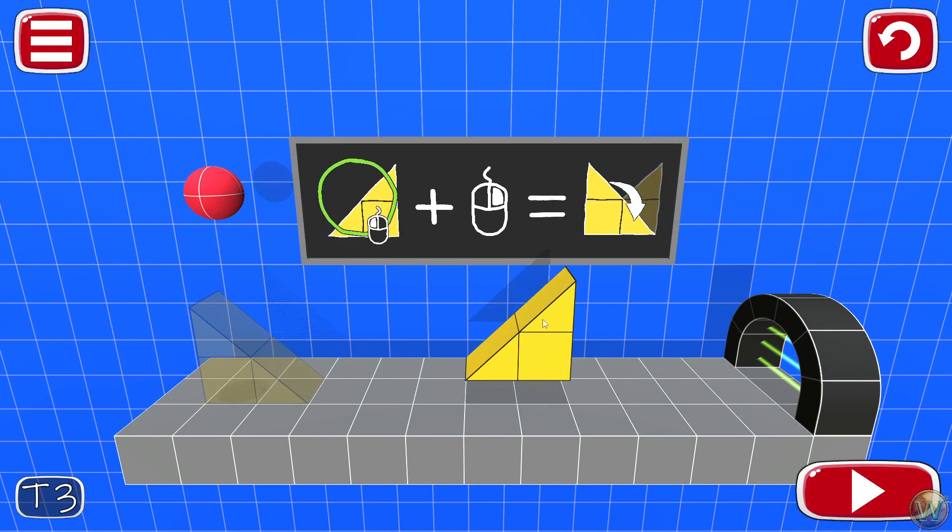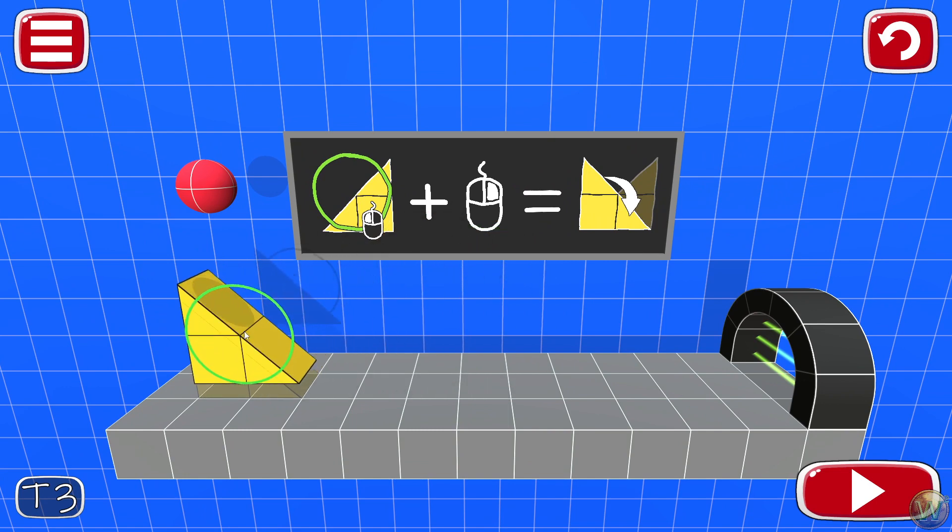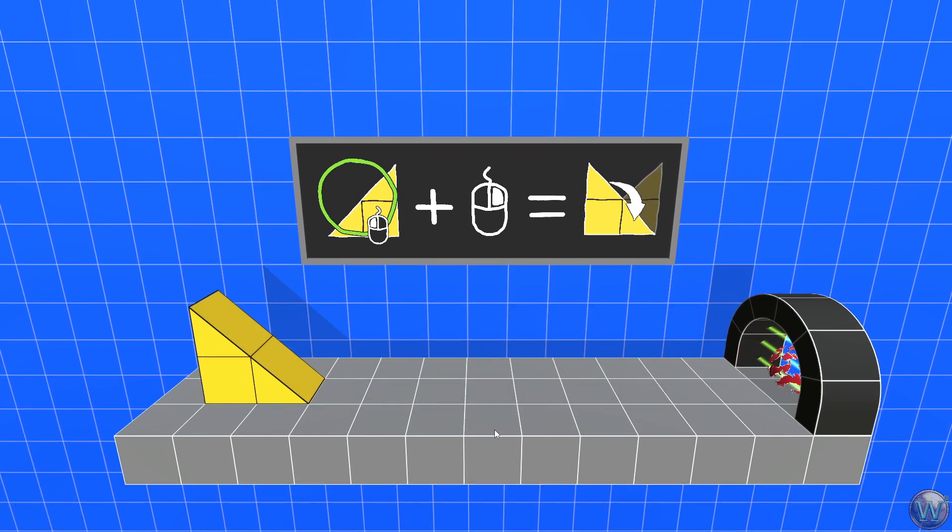And then here we can also right click to rotate objects around the green circle that is on the screen and we can place it to give the ball some direction and force its movement toward the exit.